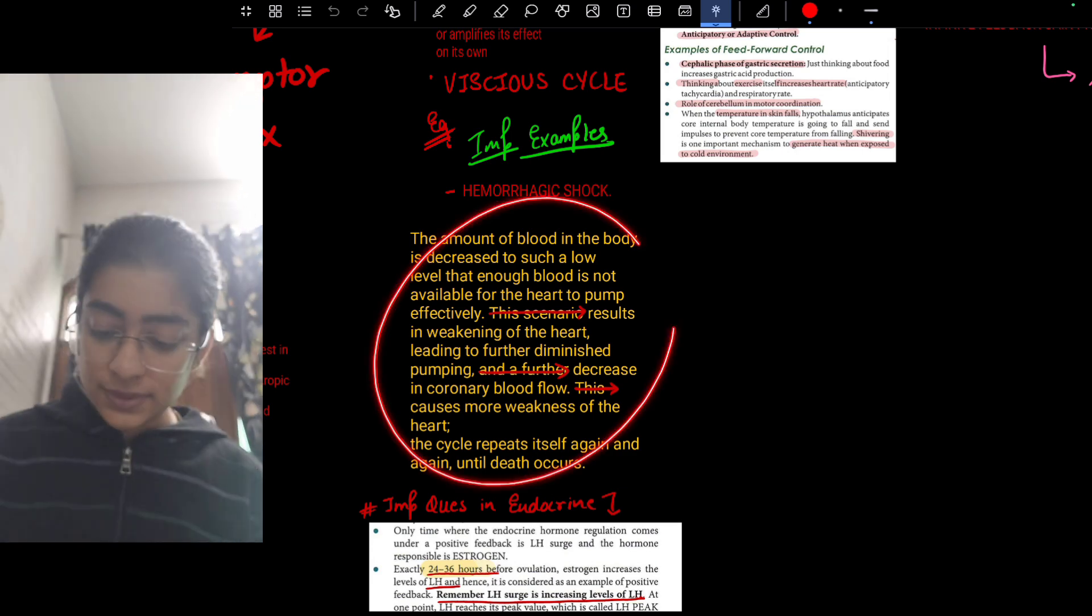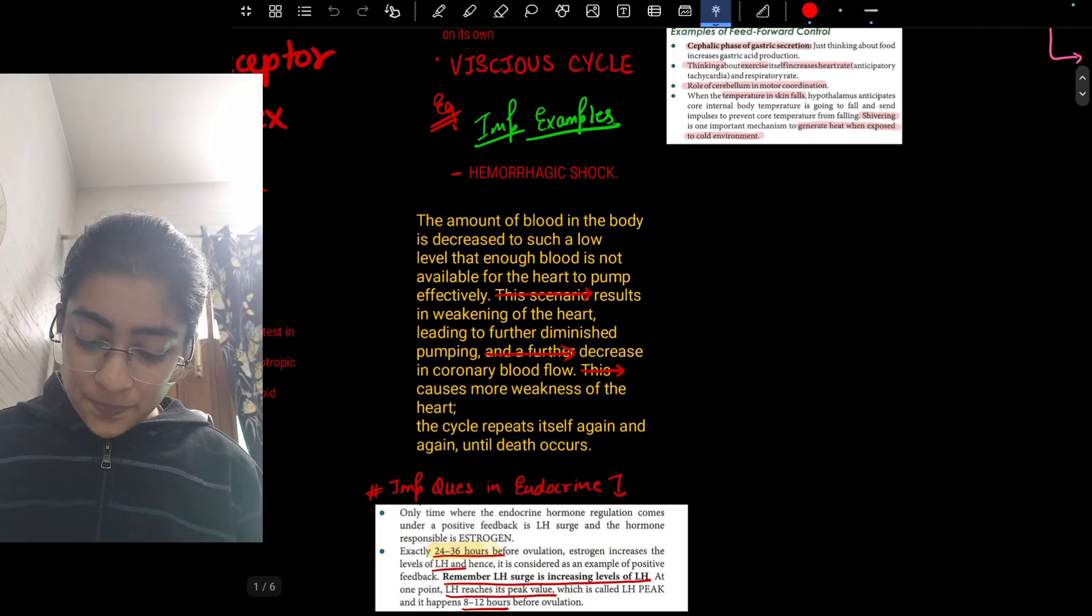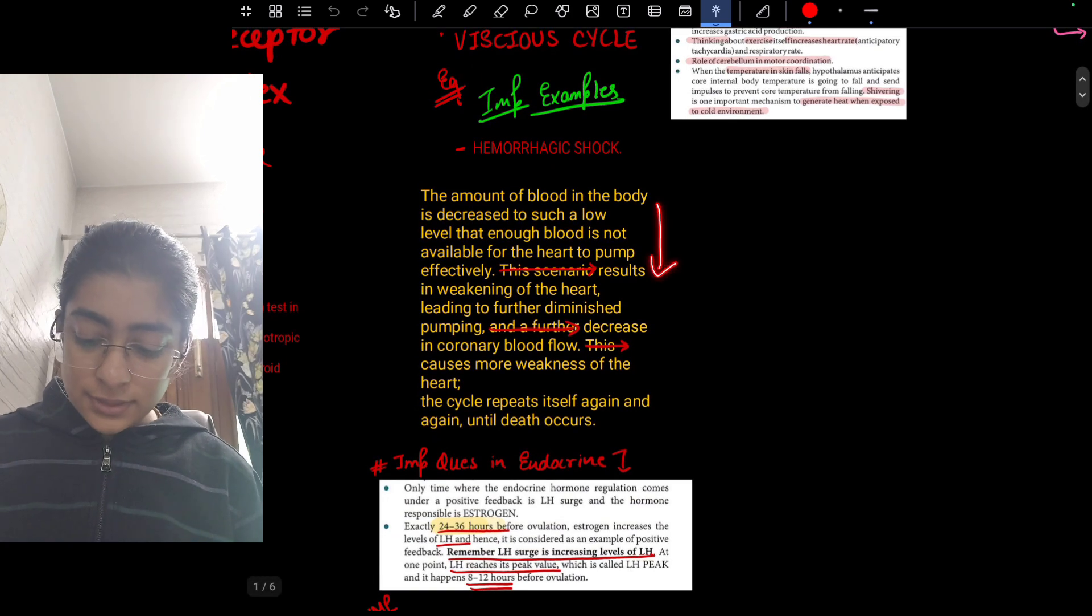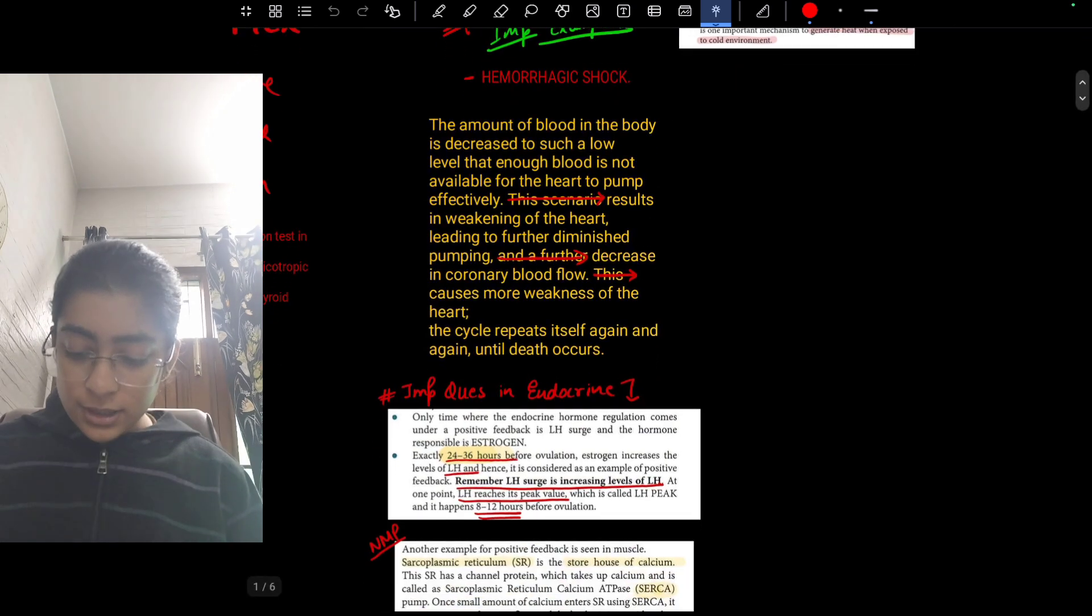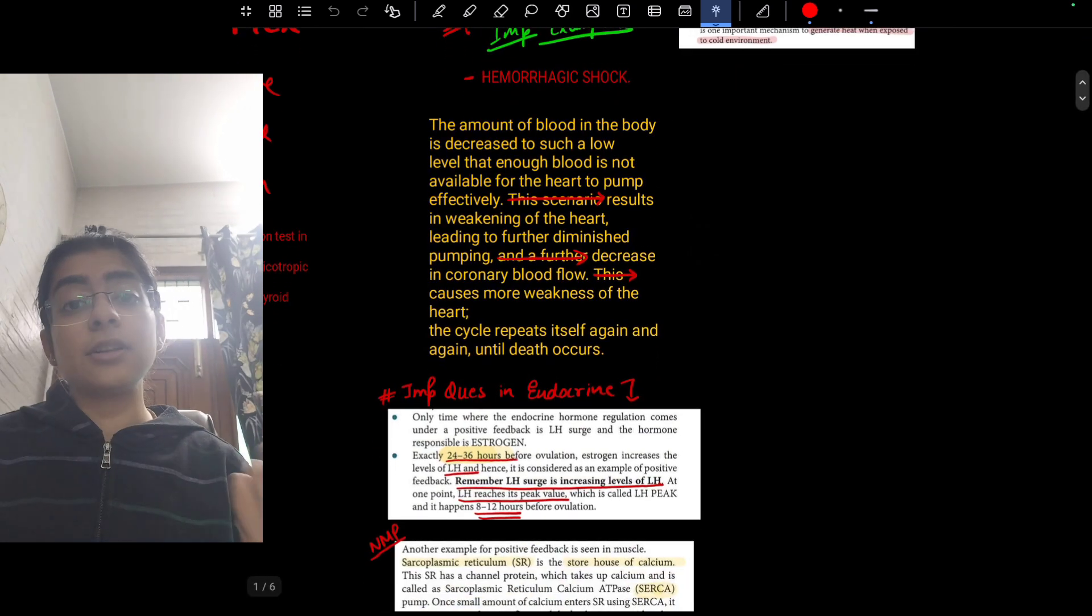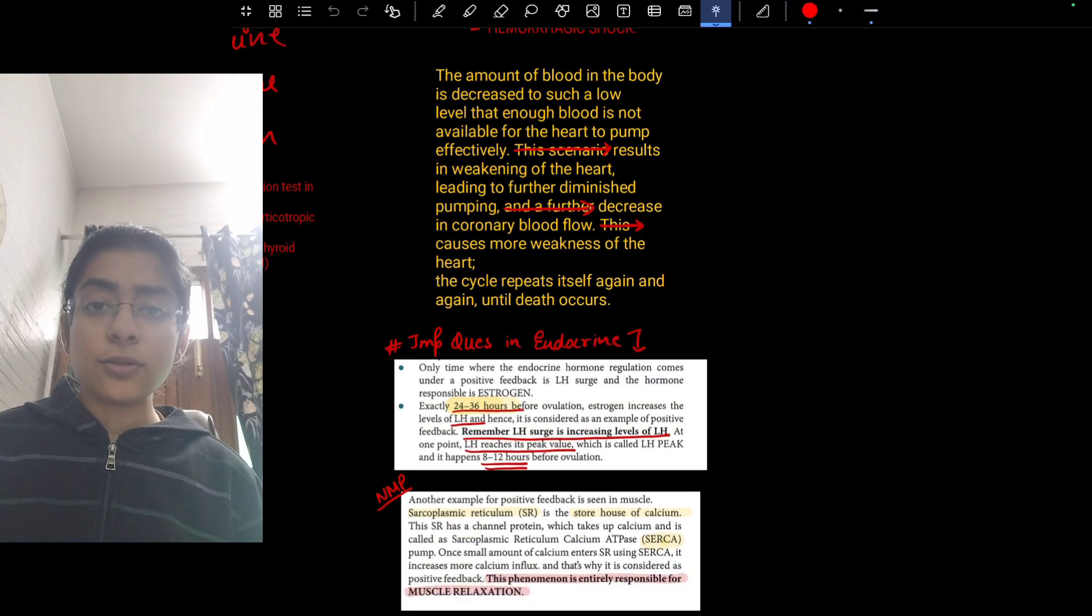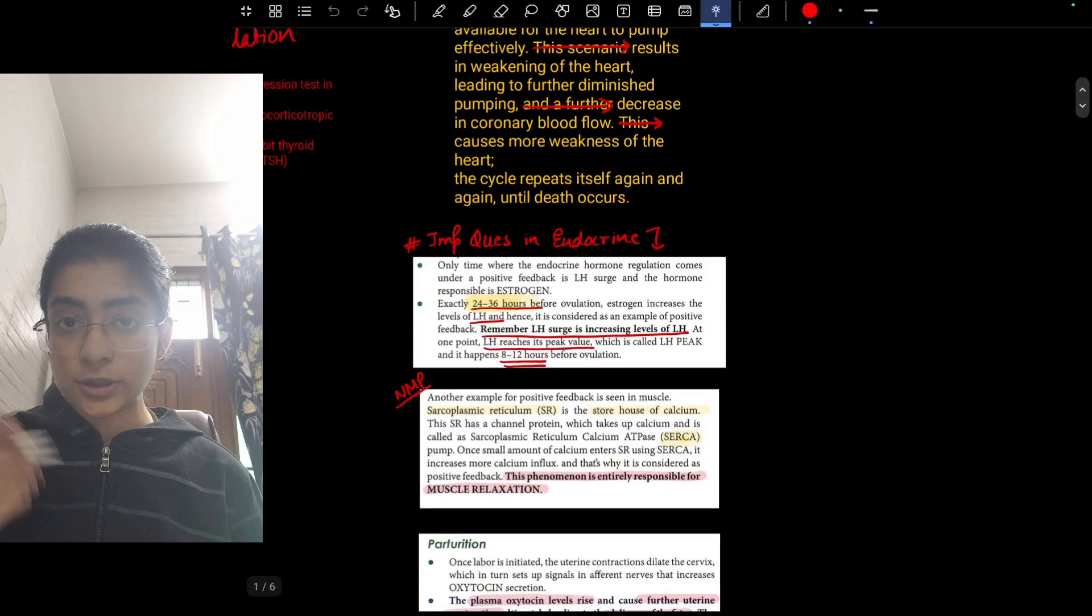The amount of blood in the body is decreased to such a low level that enough blood is not available for the heart to pump effectively. That results in weakening of the heart leading to further diminished pumping. That decreases the coronary blood flow and causes more weakening of the heart. So the cycle repeats itself and you can say it is a vicious cycle of positive feedback.